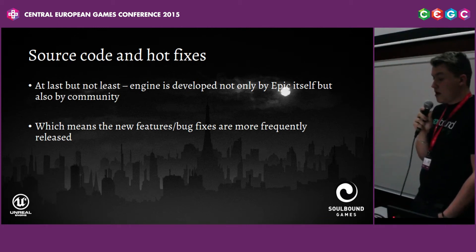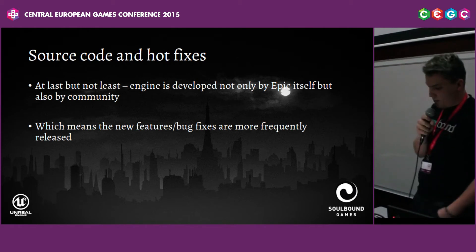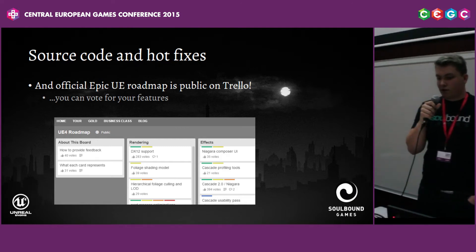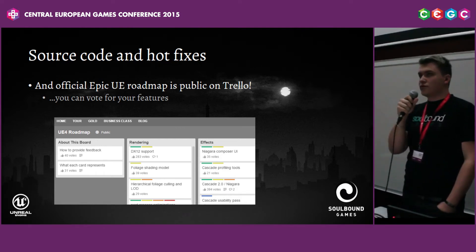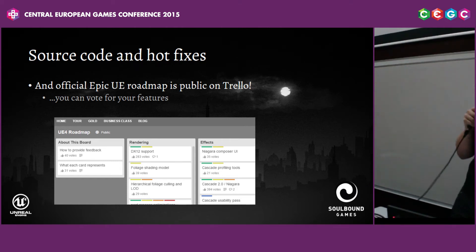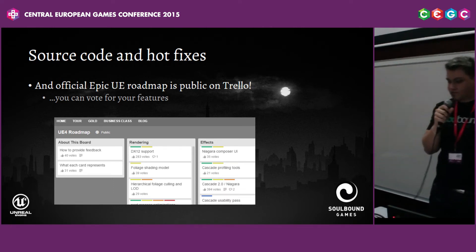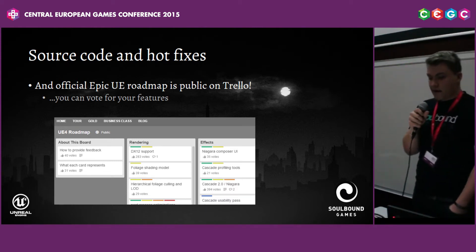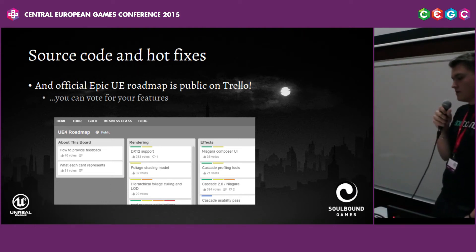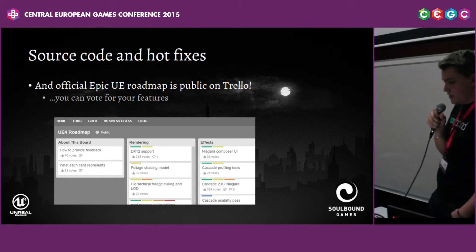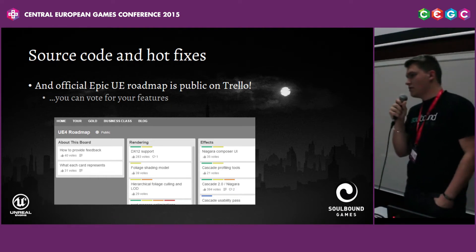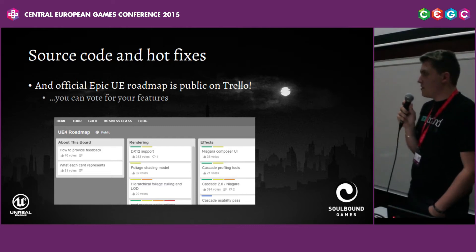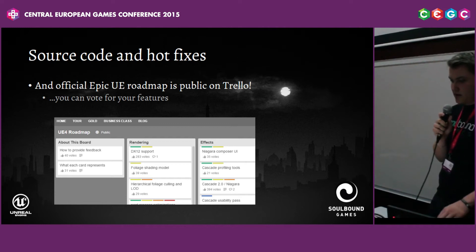I don't think Unity has a comparable public roadmap system. You can post on their forum or answers hub, but no one says 'okay, we'll implement it.' Unreal Engine 4 has a public roadmap you can vote on, which is a great feature. Next topic is visual quality. Some projects have already switched from Unity to Unreal Engine 4 for better rendering — Republic Sniper and Evolk, for example. The Unity screenshot shows poor anti-aliasing, while the Unreal Engine version looks dramatically different and better.